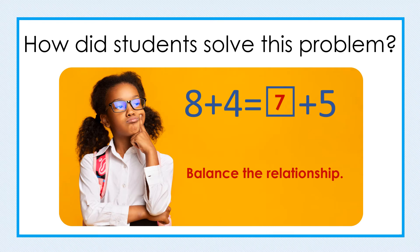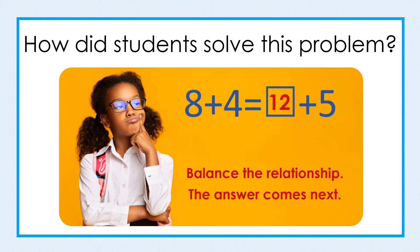The students who incorrectly answered this problem thought of the equal sign as an operator or an indicator to do something. Some students mistakenly thought the equal sign meant the answer comes next, so they added 8 plus 4 and wrote the number 12. Other students weren't sure what to do with the numbers to the right of the equal sign, so they used all the numbers, adding them and getting the number 17.